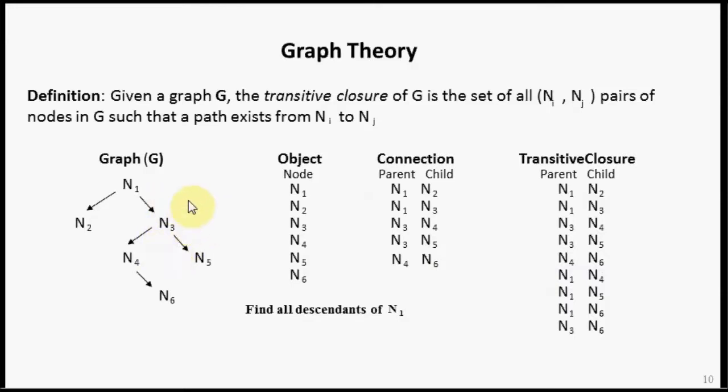Take any two nodes in the graph, let's say starting with N1 and looking at N6. Does there exist a path, directed path from N1 to N6? The answer is yes. Therefore we see a transitive closure record here. Does there exist a directed path from N2 to N6? Notice I say the word directed, you have to follow the directions of the arrows. The answer is no. So N2 to N6 does not show up here.